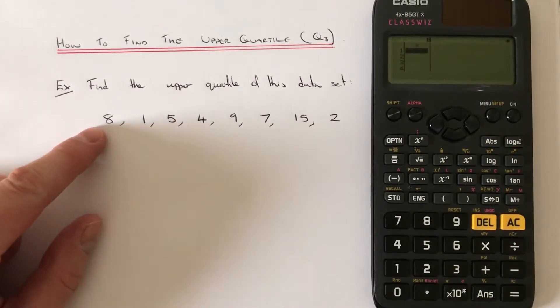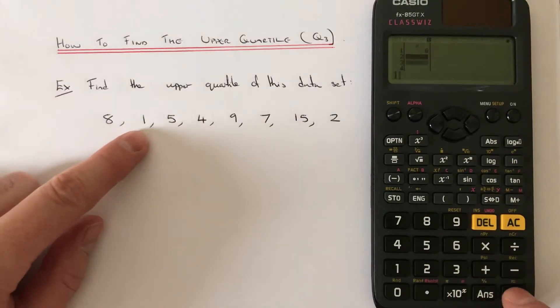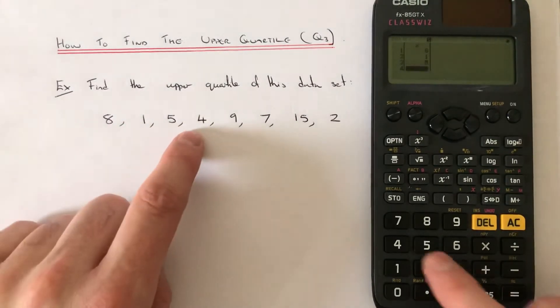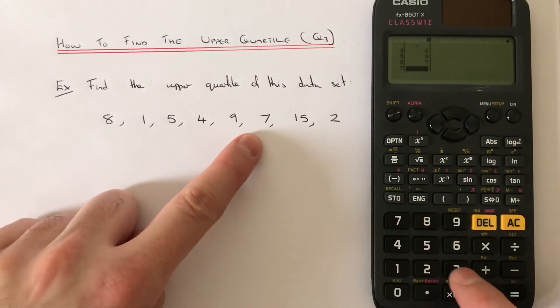So we've got to work out the upper quartile of these numbers here. So we have number 8, number 1, number 5, number 4, number 9, number 7, number 15, and number 2.